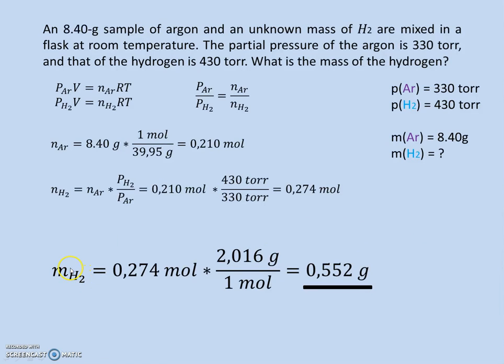So now we want to calculate, at last, the mass of hydrogen, which we do by multiplying the amount with the molar mass, which in hydrogen's case is 2.016 grams per mole. And our final answer is that hydrogen in our flask has a mass of 0.552 gram.